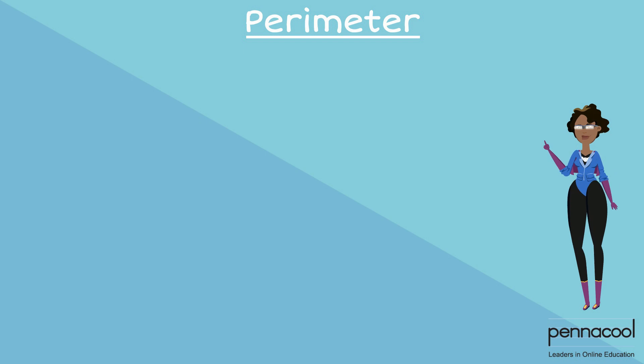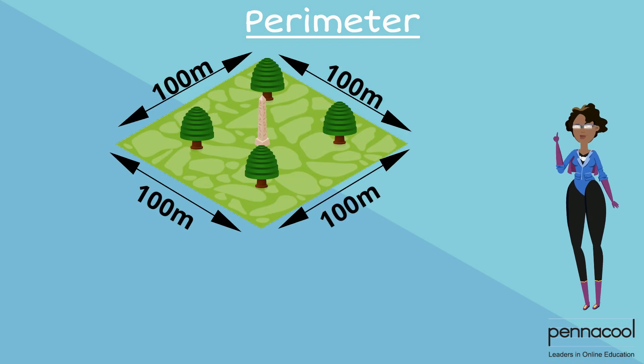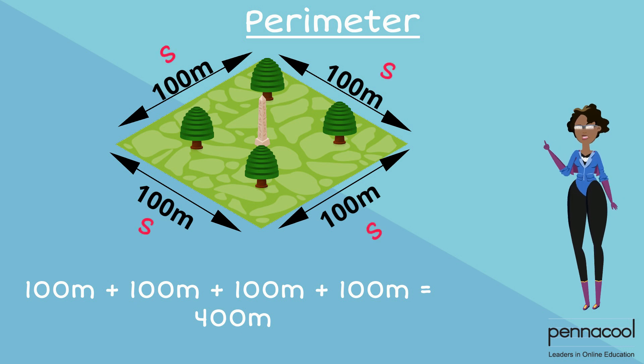As we did with the square above, we found the sum of all four sides. A square has four equal sides of length s, which allows us to use the formula s multiplied by four.